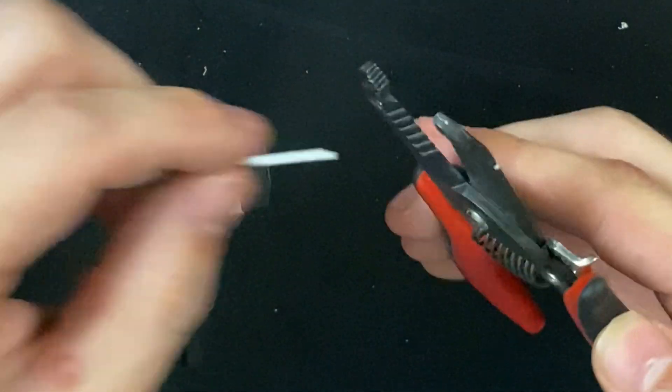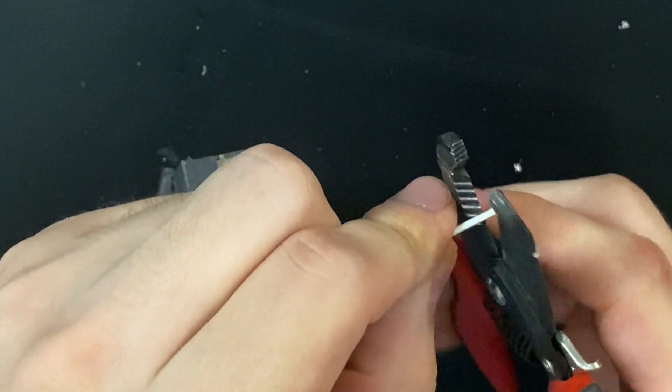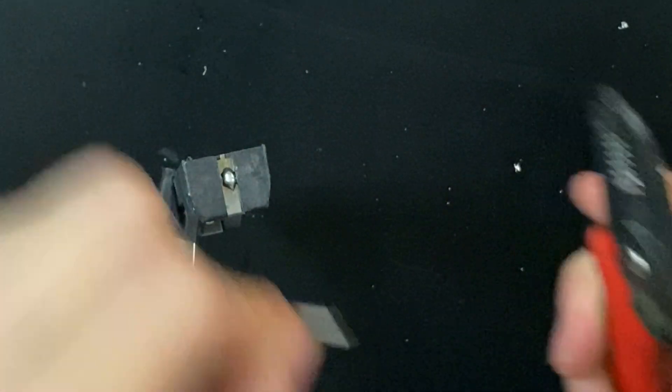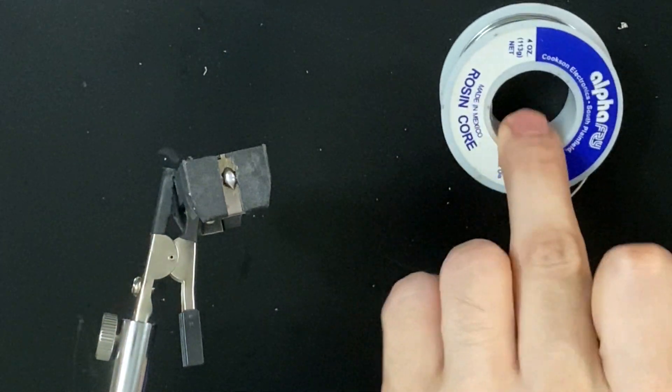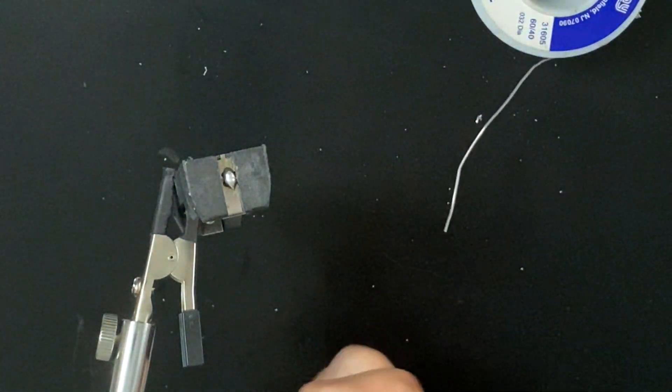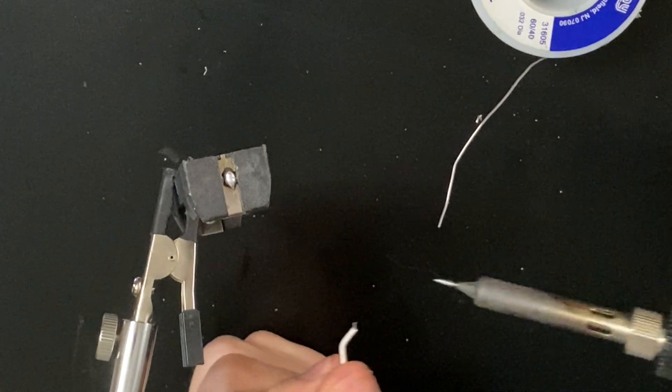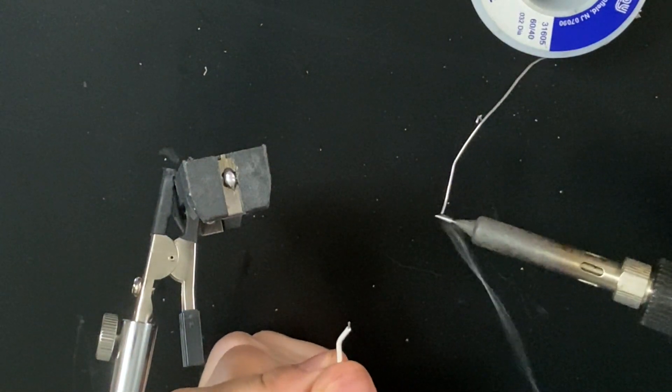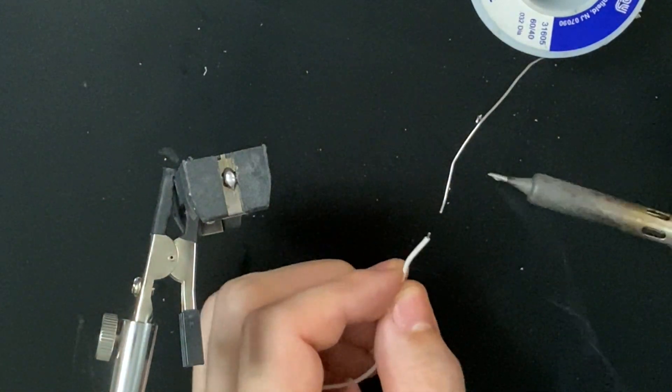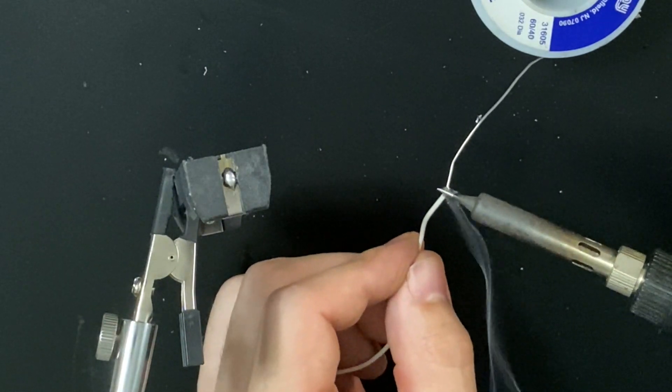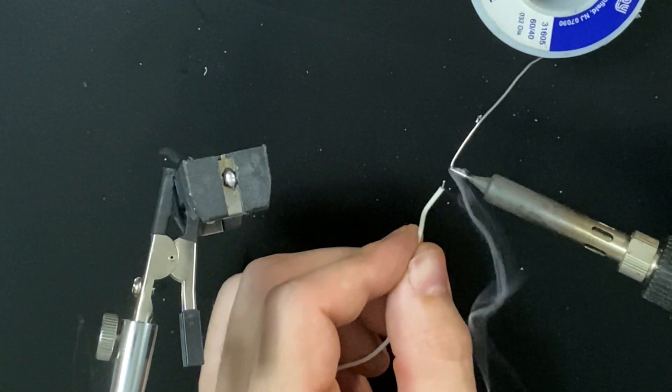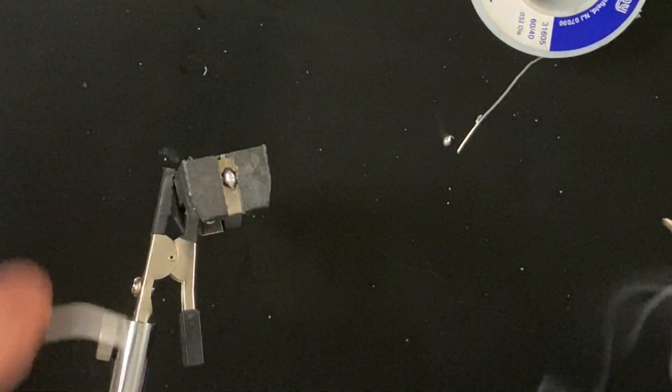Again, you're always going to need to strip your wire and pre-tin it. Again, I'll show you how to do that. So once your iron's hot, you're going to get solder on the iron, hold the wire between the solder and the iron. And there you go. You got a pre-tinned wire.